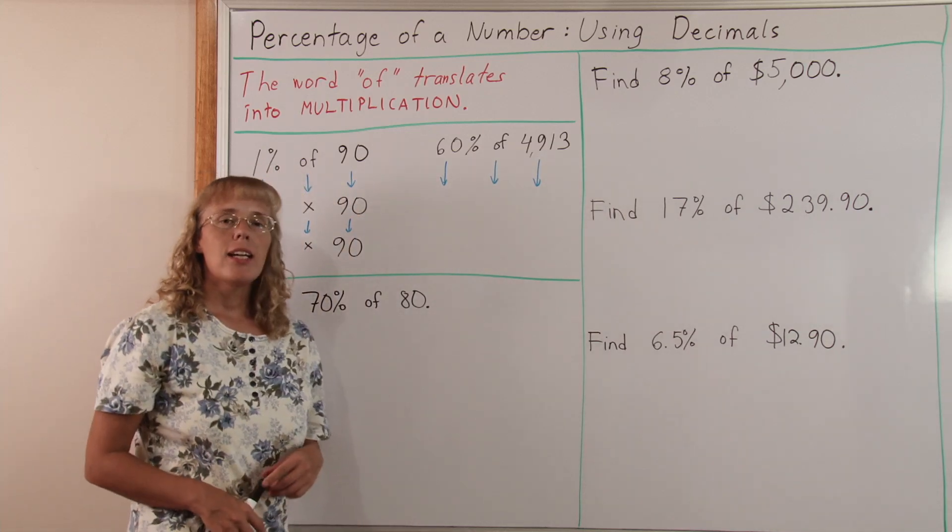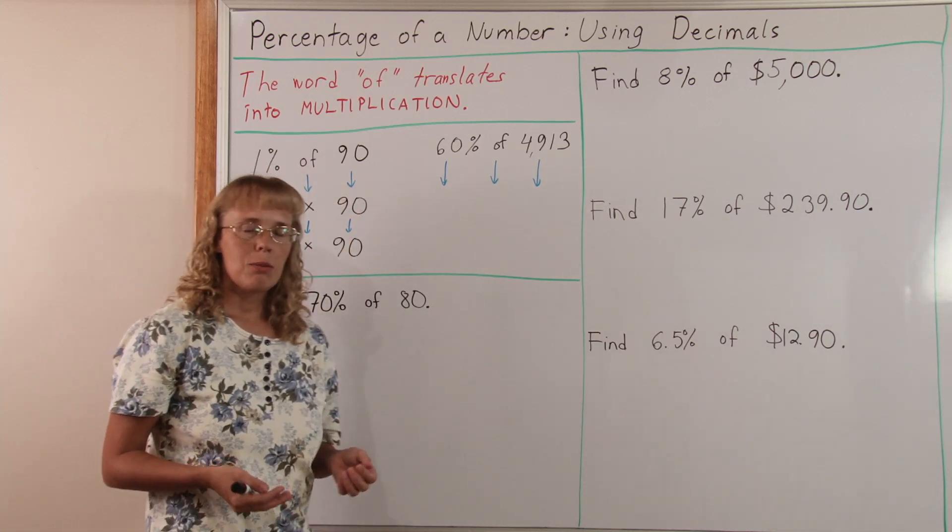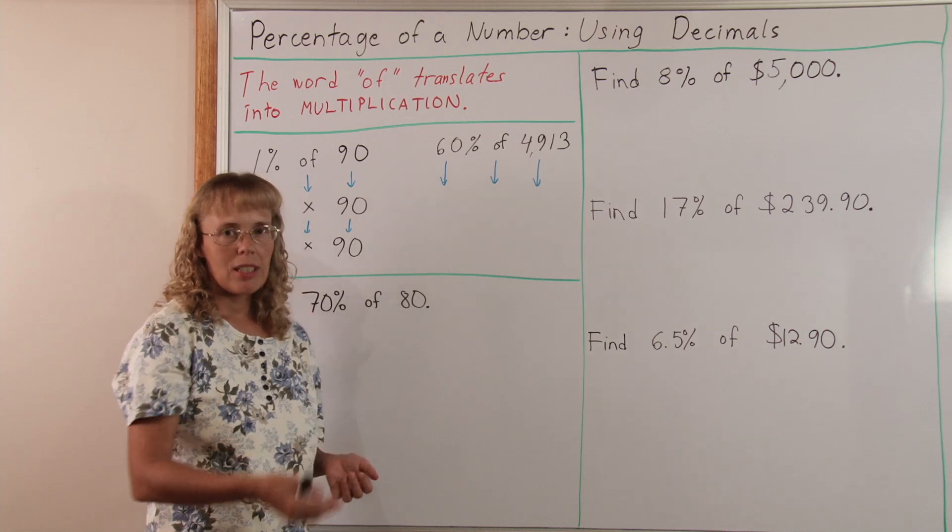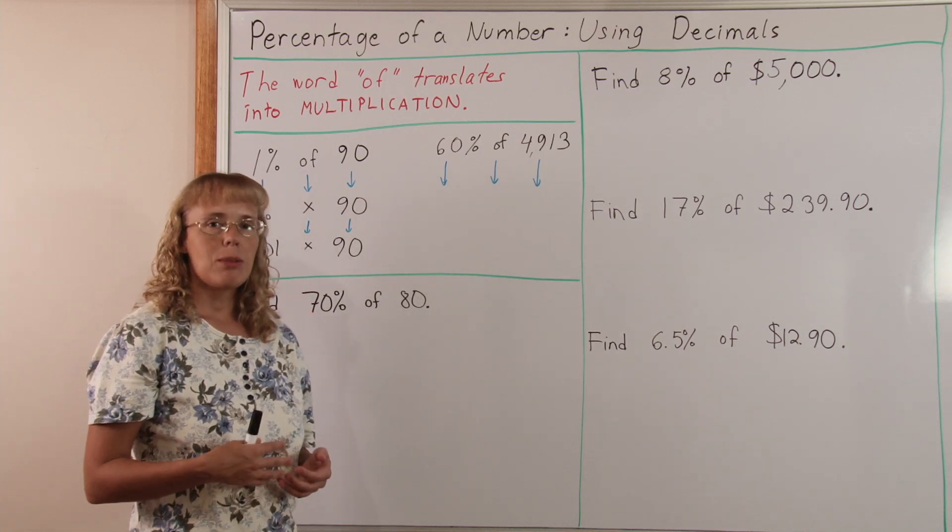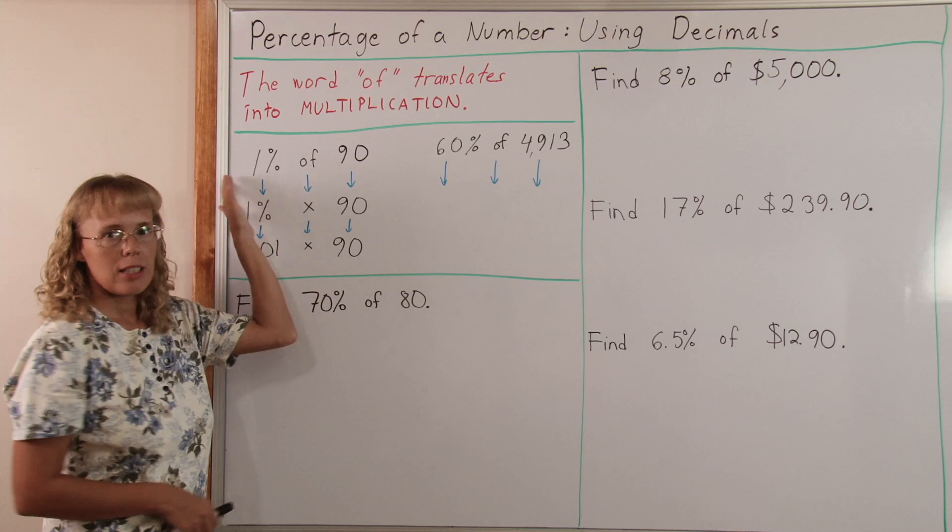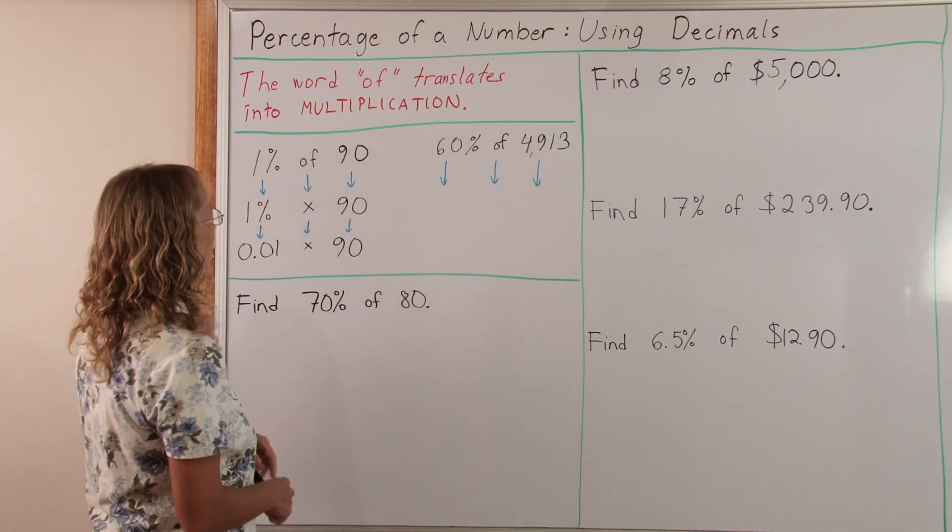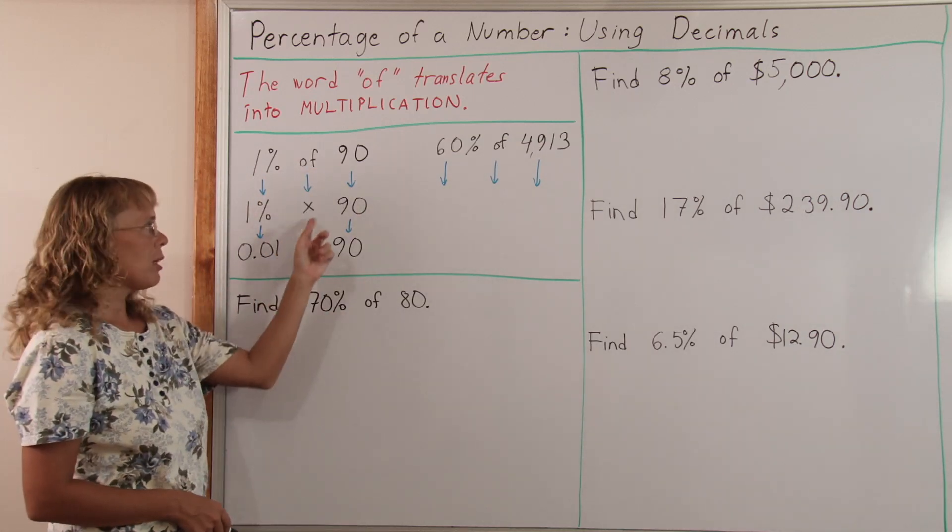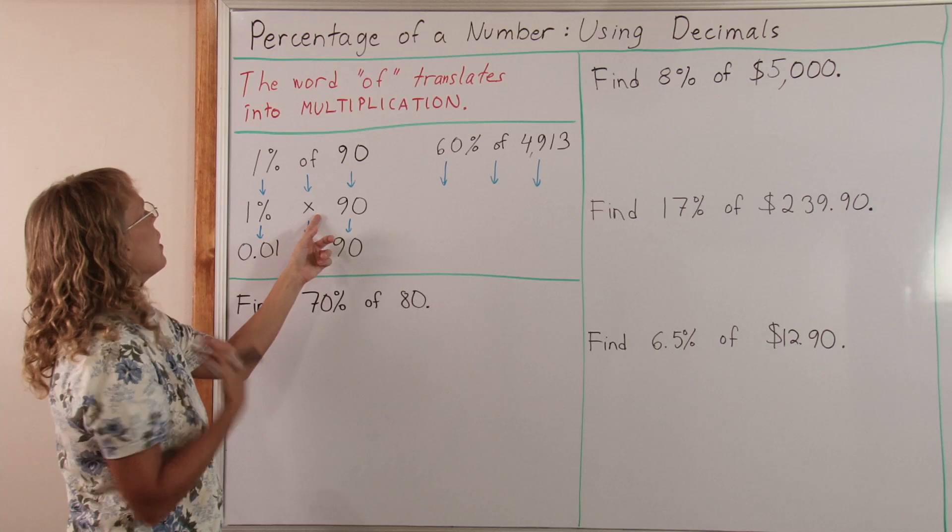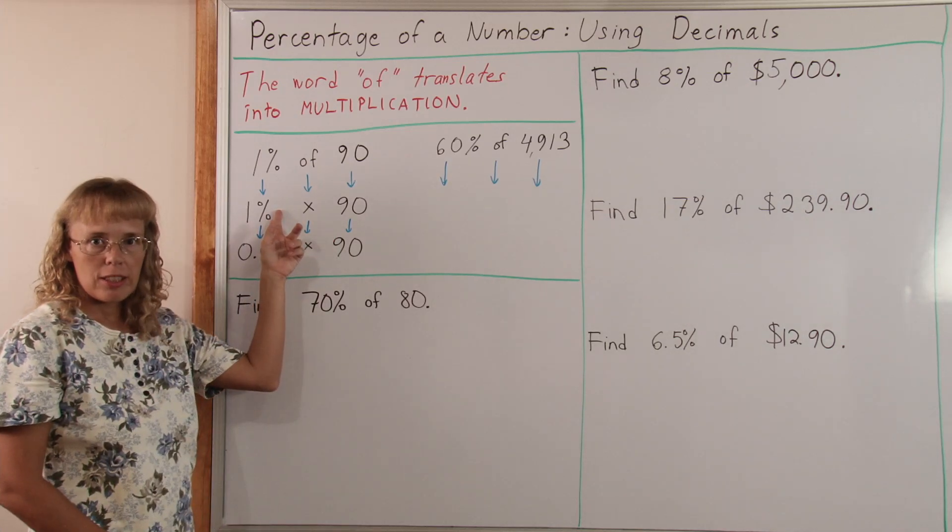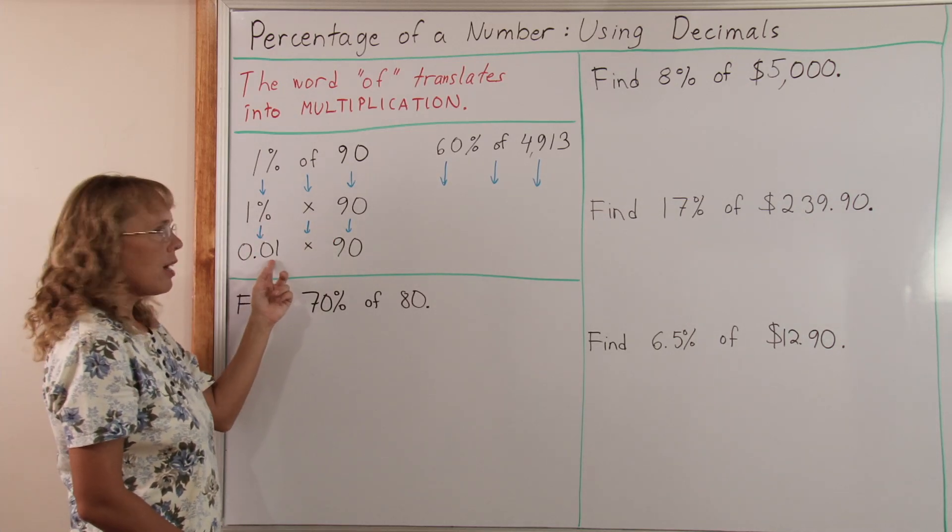Okay, the main idea here is that the word of, when we're finding so many percent of something, the of translates into multiplication. So, for example, 1% of 90. To find 1% of 90, the of goes to multiplication symbol. And then 1% is changed into a decimal. It's of course one hundredth here.